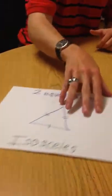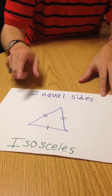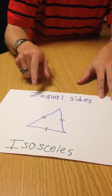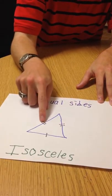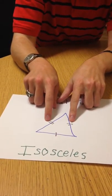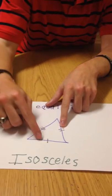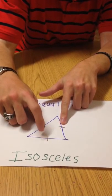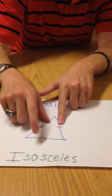The first type of triangle is the isosceles triangle. The isosceles triangle has two equal sides, as designated by these marks. These marks represent that the sides are equal, and then the one line at the bottom means that it is a different side.